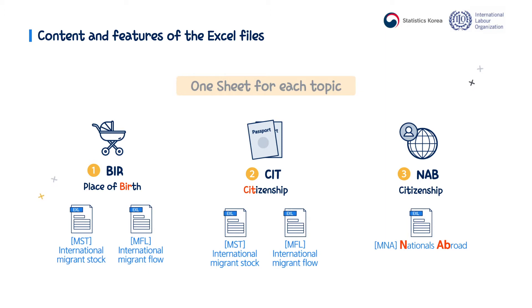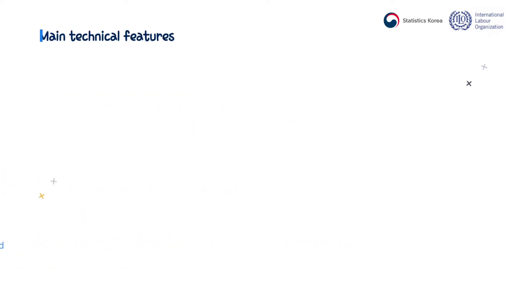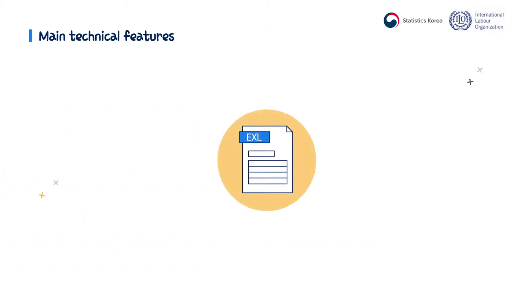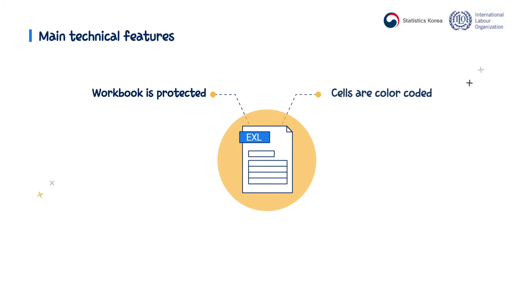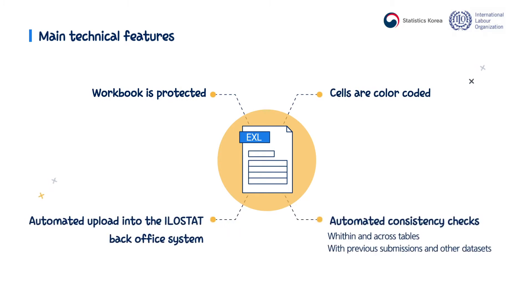The third file includes indicators on nationals abroad, from stock of nationals living abroad to outflow of nationals. In total, the full-length questionnaire comprises 35 indicators. Before we move forward, let's take a minute to highlight some technical features of the Excel files that are important to know to properly use them.